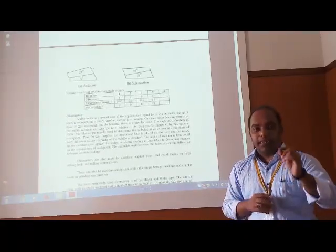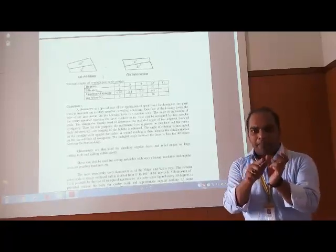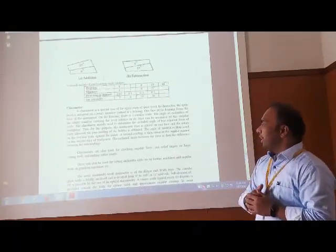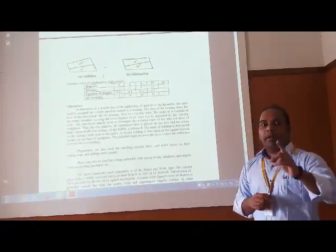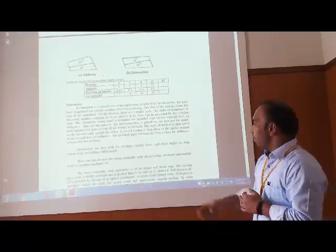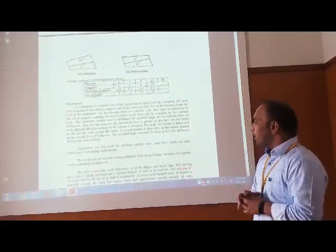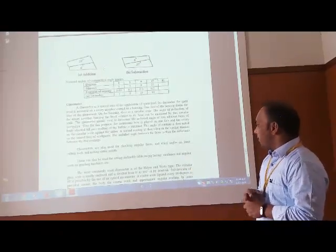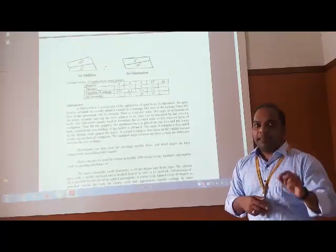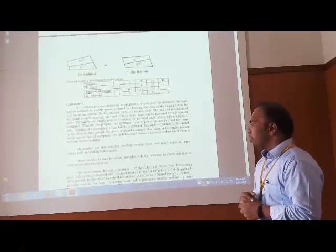Clinometers are also used for checking angular faces and relief angles on large cutting tools and milling cutter inserts. Milling cutter inserts are the things which are to be placed in between arbors therefore giving angle to the milling tool. This can be used for setting inclinable tables on jig boring machines, and angular work on grinding machines. The most commonly used clinometer is of Hilger and Watts type. It gives divided into 0 to 360 degrees at 10 equal intervals. Subdivision of 10 degrees is possible by use of optical micrometer.